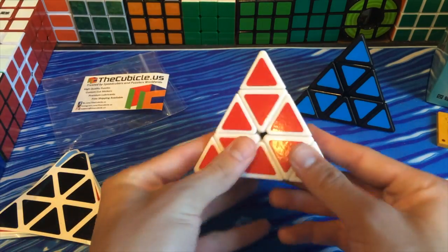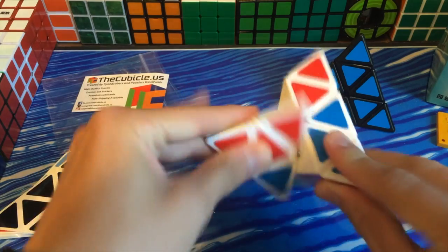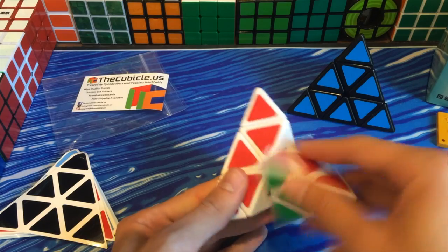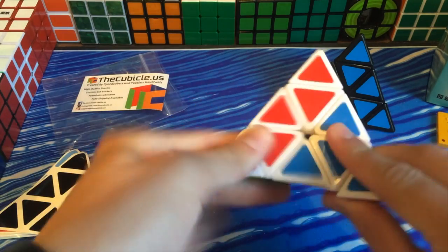Here's my white Moyu. This is a lot smoother. This is basically what it felt like out of the box - extremely smooth, kind of clicky, which I like.